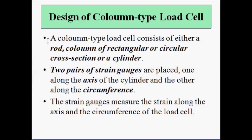The column type load cell, as the name suggests, is either in the form of a rod or column with a rectangular or circular cross section, or it can be in the form of a cylinder. Its basic configuration is in the form of a cylinder which can either be compressed or stretched because of the applied force. Normally, the compression type load cells are used.